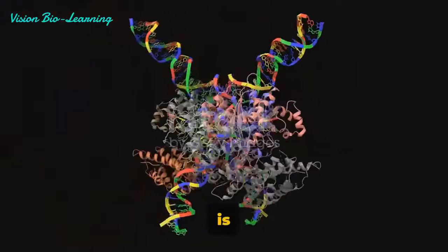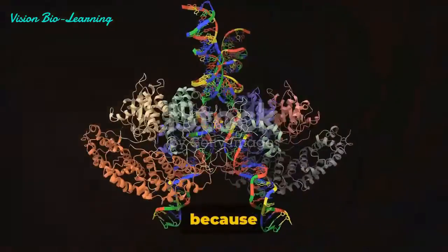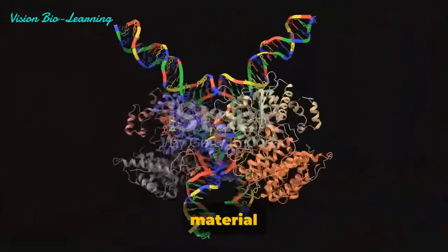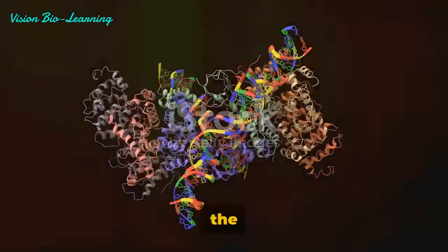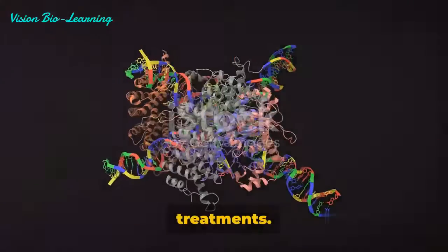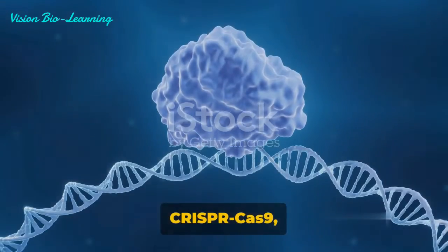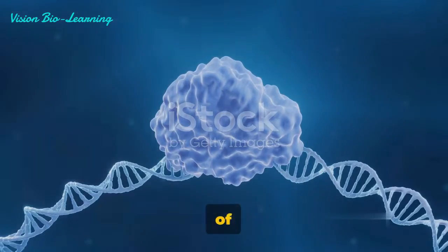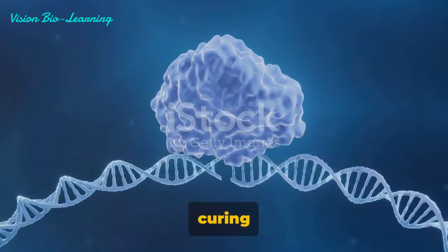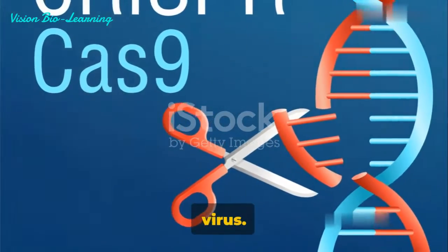HIV is notoriously hard to cure because it integrates its own genetic material into the host's DNA. This makes it nearly impossible to eliminate the virus completely with current treatments. But with CRISPR-Cas9, we could potentially cut the HIV DNA out of the host cells, effectively curing the individual of the virus.